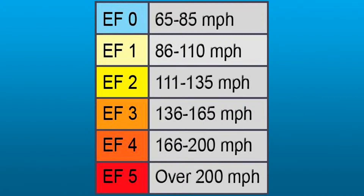In either case, both scales had six categories that rank from zero to five. Each one of those categories contains a range of wind speeds, and so we use that scale to figure out the approximate wind speed of a tornado by surveying the damage that that tornado causes.